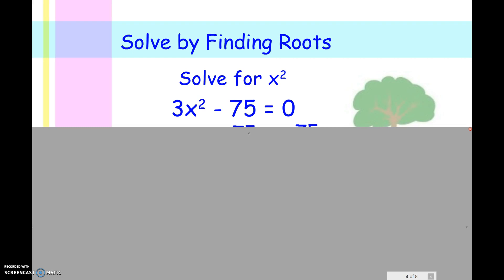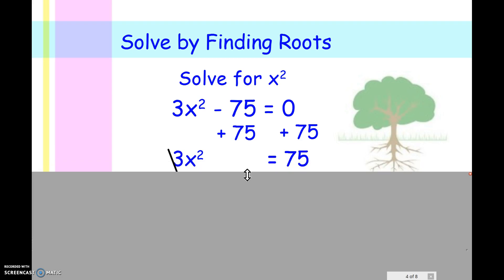Our next method of finding our roots is by solving using square roots. You can only use this method if you don't have a B. Because if you don't have a B, you only have the x squared, then what you can do is solve for x squared, get x squared by itself. So your first step is going to be to add 75 to both sides, which will leave us with 3x squared equals 75.